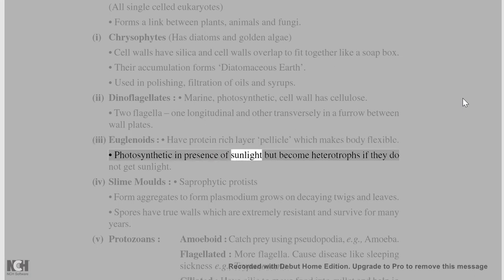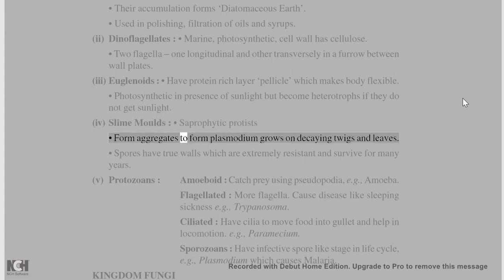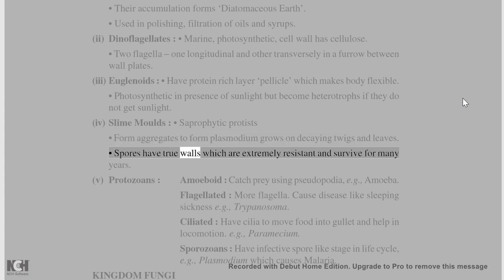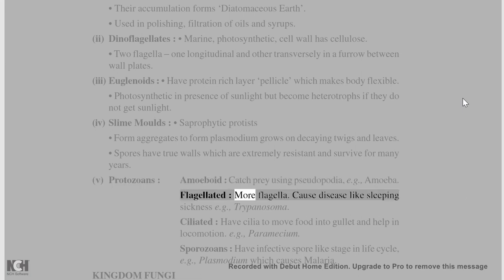Euglenoids are photosynthetic in the presence of sunlight but become heterotrophs without sunlight. Slime molds are saprophytic protists that form aggregates called plasmodium and grow on decaying twigs and leaves. Their spores have true walls, are extremely resistant, and survive for many years. Amoeboid protozoans catch prey using pseudopodia, e.g., Amoeba. Flagellated protozoans have flagella and cause diseases like sleeping sickness, e.g., Trypanosoma.